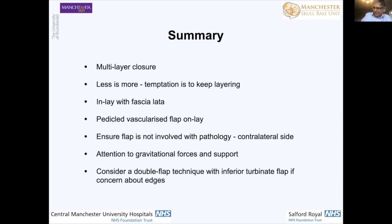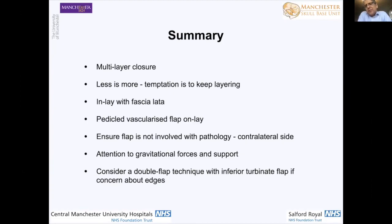In summary: we perform a multi-layer closure — an inlay and an onlay — and we feel that less is more; the temptation is to keep layering. We use an allograft inlay material — the fascia lata — which behaves very much like autologous fascia lata. We use an onlay with a pedicled nasoseptal flap if available. It's very important to ensure that the flap isn't involved with the pathology, so we tend to use the contralateral side. When supporting, be aware of gravitational forces — otherwise your flap will just drop off. Also think about using a combination of flaps if you're concerned about margins and leaving gaps.